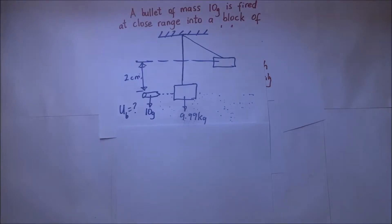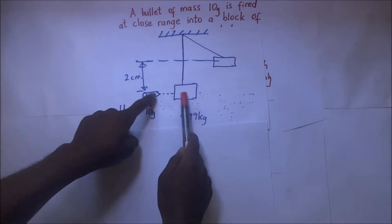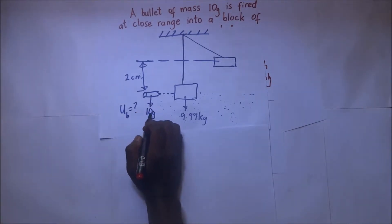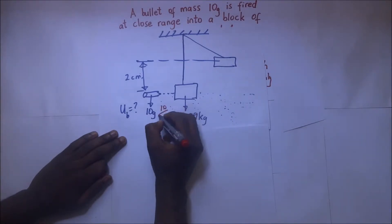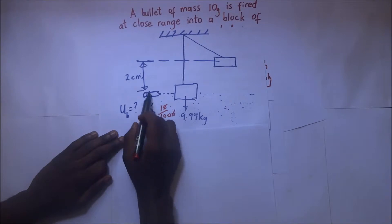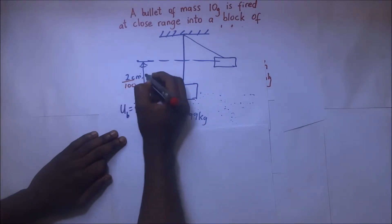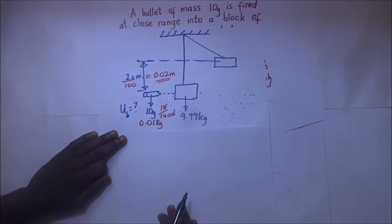Let's do it the long way, from first principles, using two principles: conservation of momentum and conservation of energy. The mass of the bullet is 10 grams; converting to kilograms gives 0.01 kilograms. The height through which it raises is two centimeters; converting to meters by dividing by 100 gives 0.02 meters.